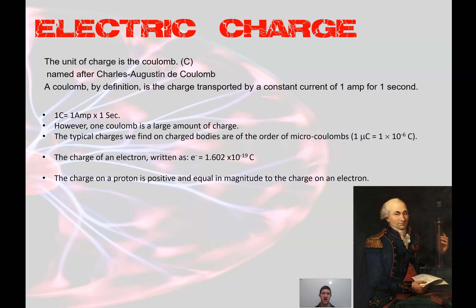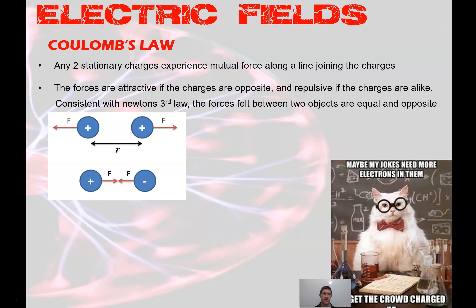The unit of charge is the coulomb, named after Charles Augustin de Coulomb. By definition, a coulomb is the charge transported by a constant current of one amp for one second. In the real world we don't see coulombs very often — we use much smaller values. The typical charge found on a body is in the order of microcoulombs, so 10 to the minus 6 coulombs. The charge of one single electron is 1.602 times 10 to the minus 19 coulombs.